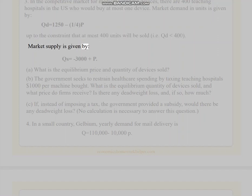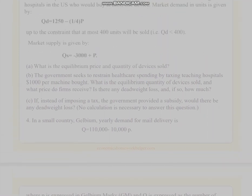Market supply is given by QS = -3,000 + P. A. What is the equilibrium price and quantity of devices sold? B. The government seeks to restrain healthcare spending by taxing teaching hospitals $1,000 per machine bought. What is the equilibrium quantity of devices sold, and what price do firms receive? Is there any deadweight loss, and if so, how much?